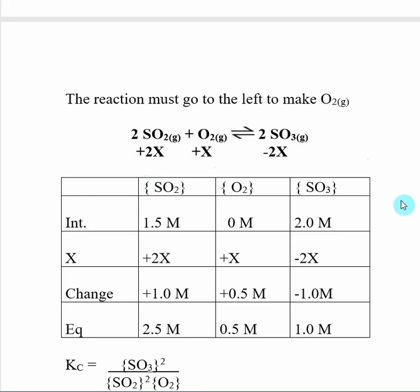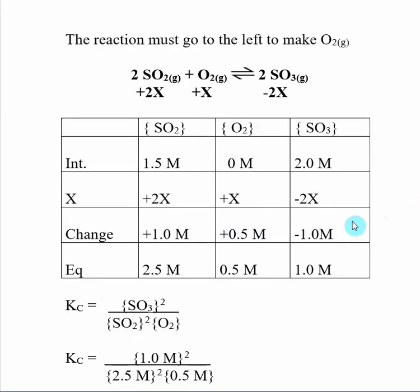So here we go to the ICE table, and I was given the initial concentration of SO2 and SO3. And in the reaction, I'm told that the equilibrium concentration of SO3 is 1.0 molar, which means the change from initial to my equilibrium is minus 1.0 molar. And then based off of my X values,